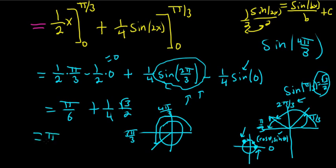So the final answer is pi over 6 plus square root of 3 over 8, and that's it. I hope this video has been helpful to someone in the world. See you later. Thanks, everyone.